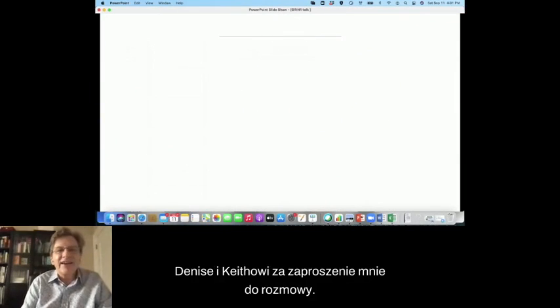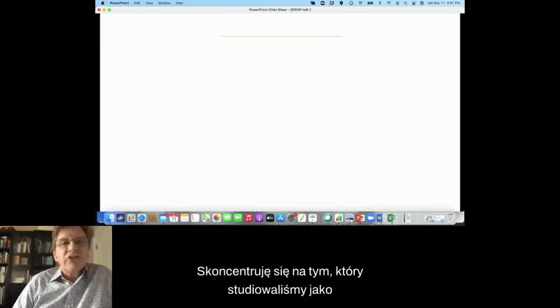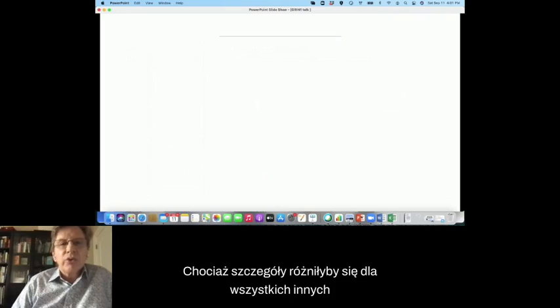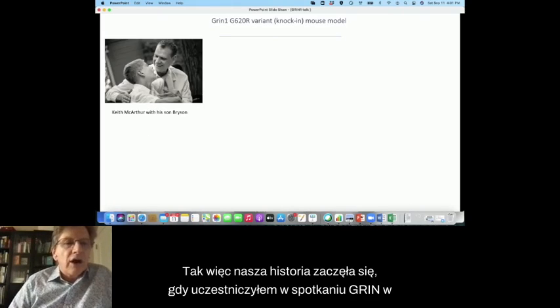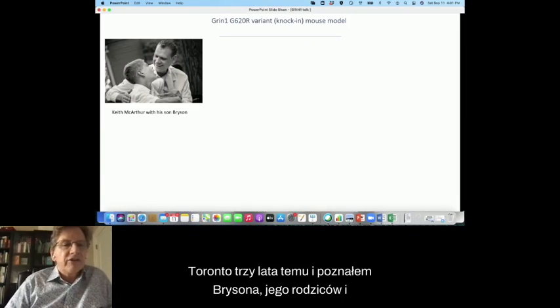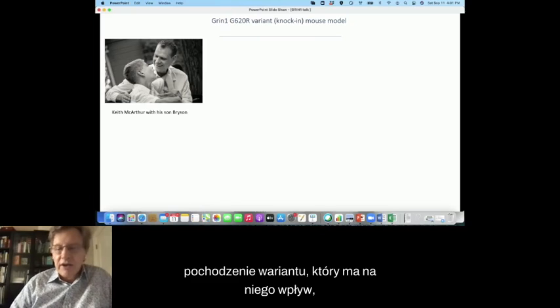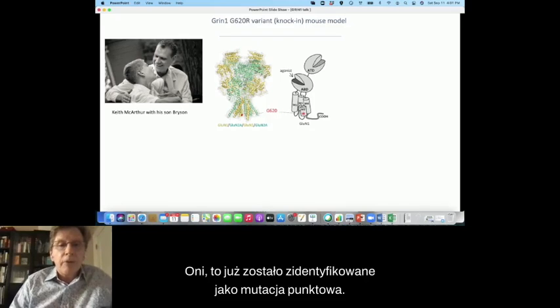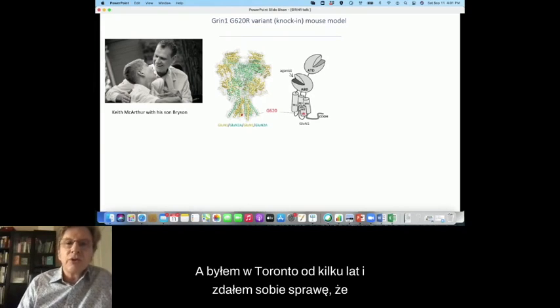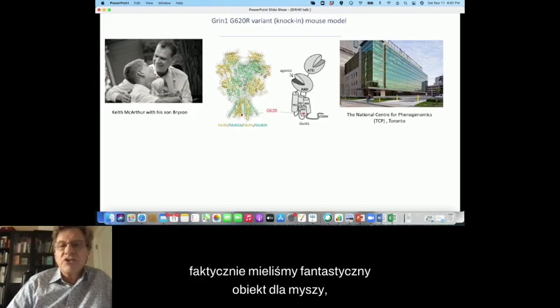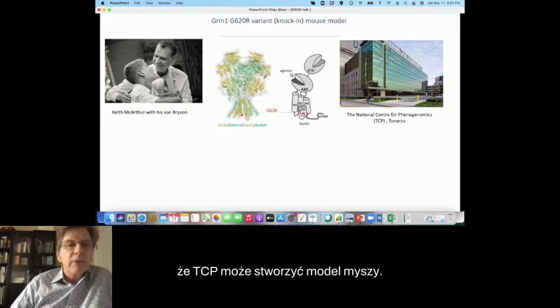Okay. Well, thank you very much. I'd like to thank Megan, Denise and Keith for inviting me to talk. I was asked to talk about mouse models of GRIN disorders. I'm going to focus on the one that we have been studying as an example, but the principles will apply, although the details will differ for all of the different NMDA, AMPA and kainate receptor variants. So our story started when I attended a GRIN meeting in Toronto three years ago. And I met Bryson, his parents and Keith asked, is there anything we can do to help understand what could be the origin of the variant that is affecting his son Bryson? It was already identified as a point mutation, a de novo point mutation in the GRIN1 gene, a G620R substitution.